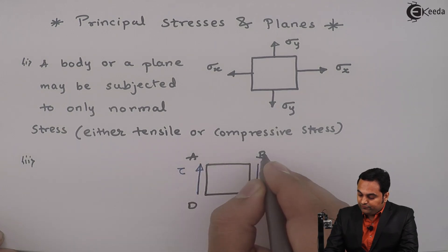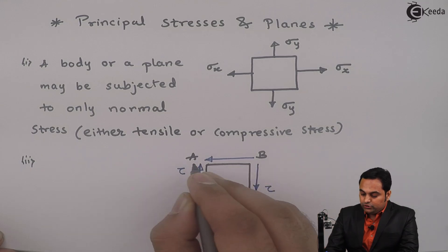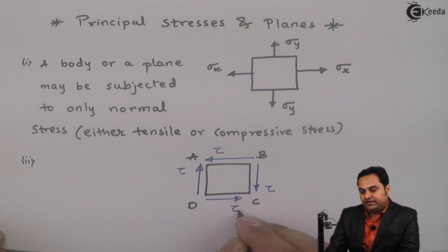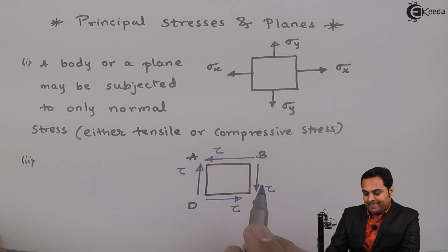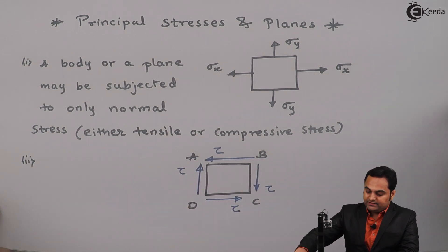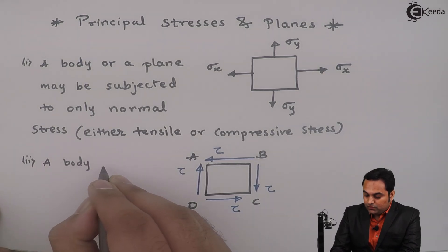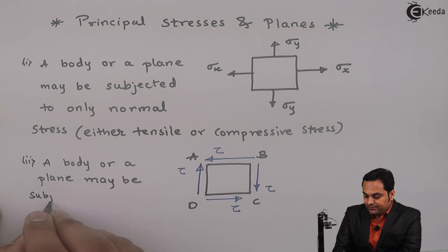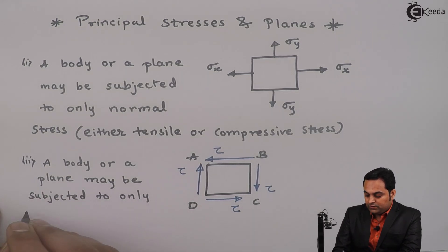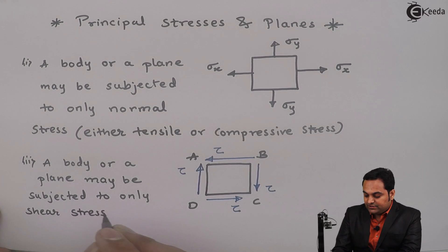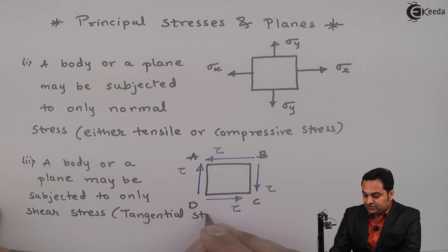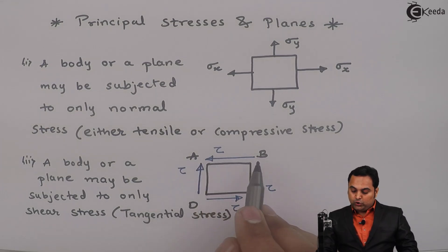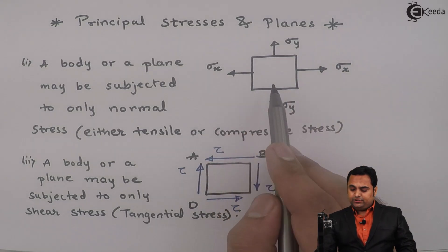The other possibility is that on face AB there can be shear stress acting towards the left, Tau, and then on face DC there can be a shear stress acting towards the right. Because of that, this is called anti-clockwise shear — again there is shearing action. So I can say that a body or a plane may be subjected to only shear stress, which is also called tangential stress.